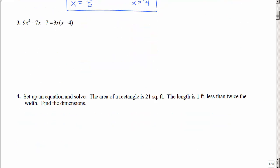Now how is this next problem different? It's not equal to zero. So we can't just start factoring. We have to set it equal to zero. So what can I do with this? I have to distribute. So I have 9x squared plus 7x minus 7, 3x squared minus 12x.